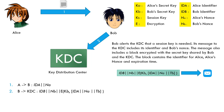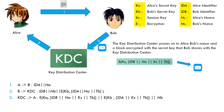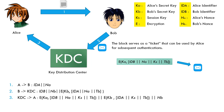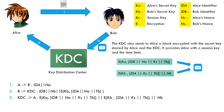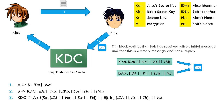The Key Distribution Center passes on to Alice a nonce and a block encrypted with the secret key that Bob shares with the Key Distribution Center. The block serves as a ticket that can be used by Alice for subsequent authentications. The Key Distribution Center also sends to Alice a block encrypted with the secret key shared by Alice and the Key Distribution Center. It provides Alice with a session key and the time limit. This block verifies that Bob has received Alice's initial message and that this is a timely message and not a replay.